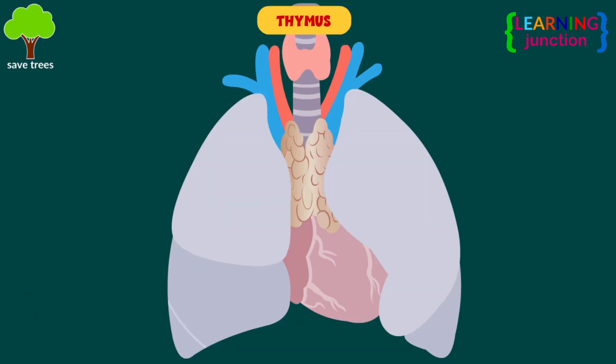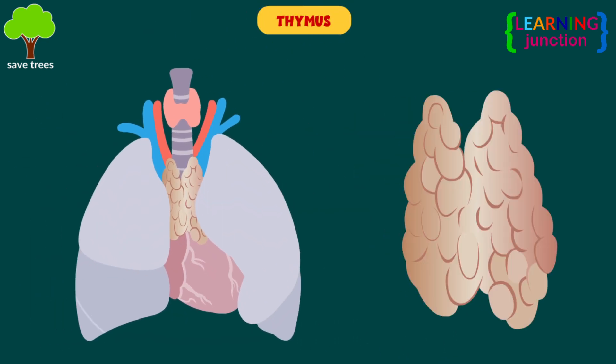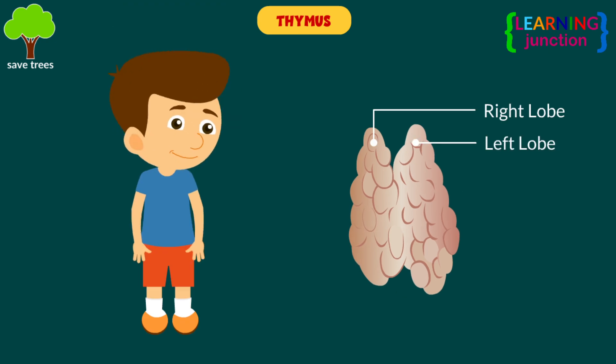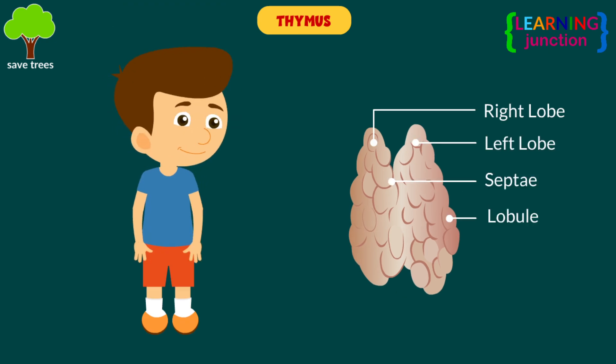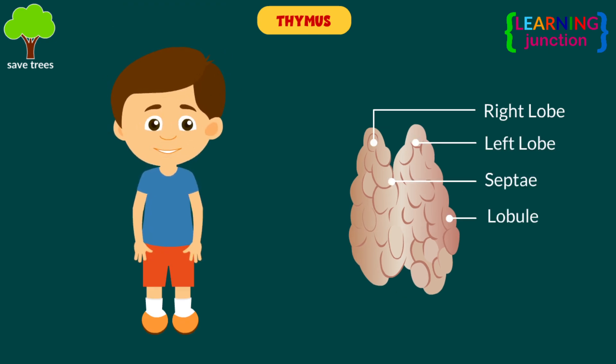Thymus is located in the upper chest beneath the breast bone. It matures a specialized type of blood cells that fight off foreign organisms.